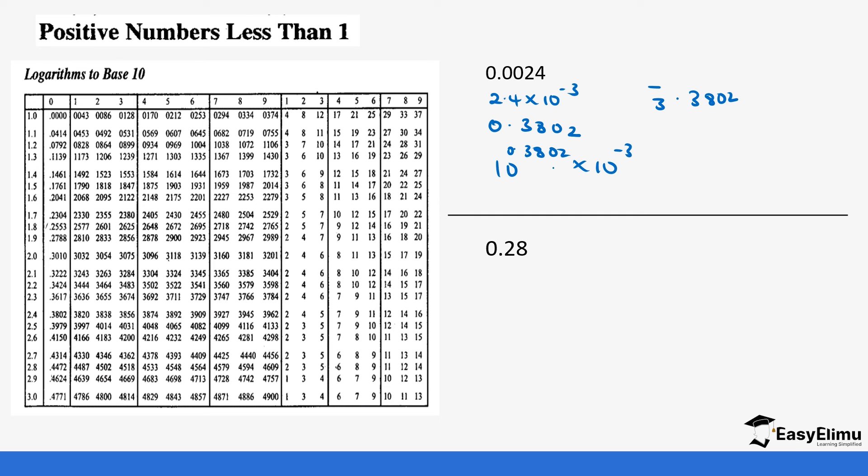Let's look at another question which is 0.28. We change this to standard form as well, so we move the decimal place once to form 2.8 times 10 to the power negative 1. So 2.80 is 0.4472. This is the same as 10 to the power 0.4472 times 10 to the power negative 1. When we add the indexes it becomes bar 1.4472.